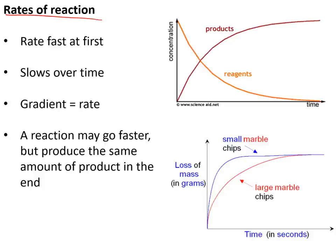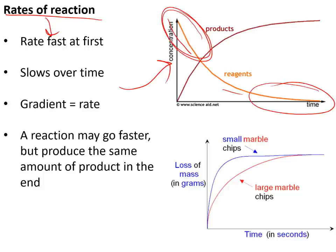The rate of a chemical reaction is always fast at the start and then decreases over time. On a graph of concentration of reactants over time, the amount of reactants decreases quickly at first and then gets shallower. The steep part is where the reaction is fastest; the shallower part is where it is slower. On these graphs, the gradient is the rate of reaction, calculated as the change in y divided by the change in x.